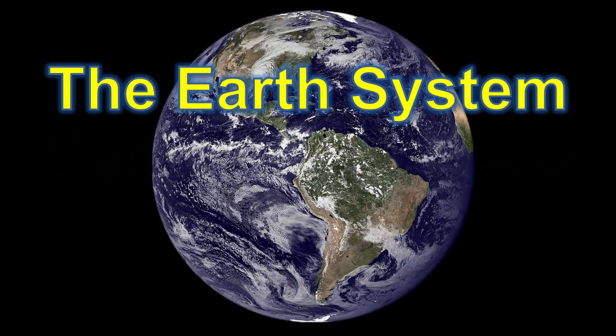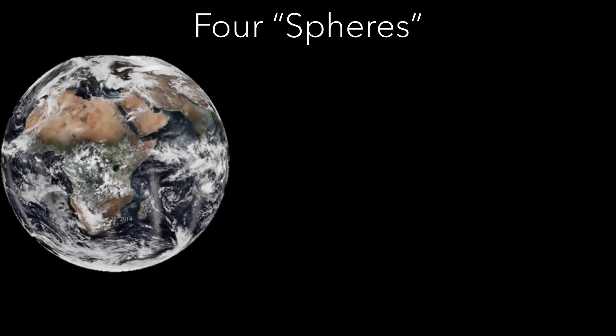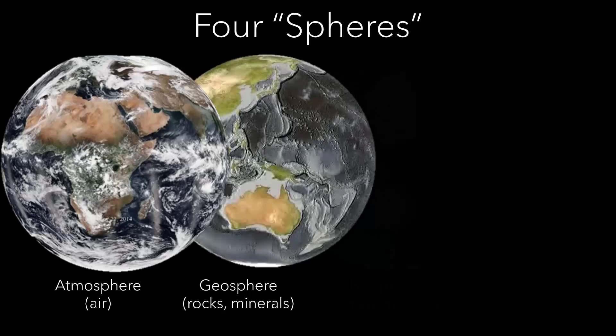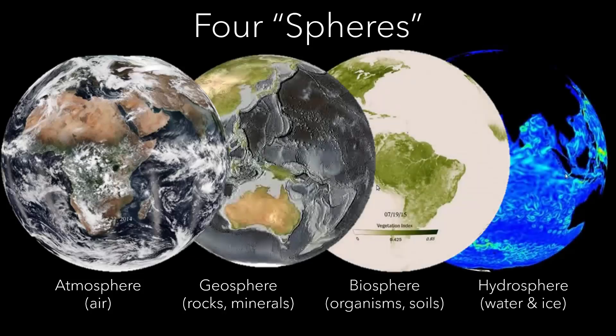In this video, we're going to describe the components of the Earth's system and explore how matter is exchanged between each of the four main spheres of the system. Although the Earth looks like one large structure, the air, water, rocks, and life are representatives of interconnected components or spheres in the Earth's system.